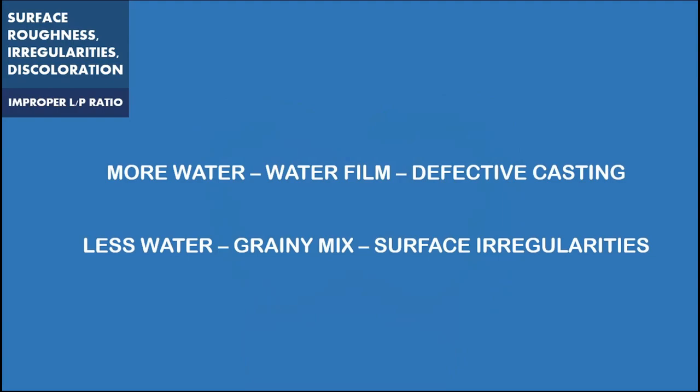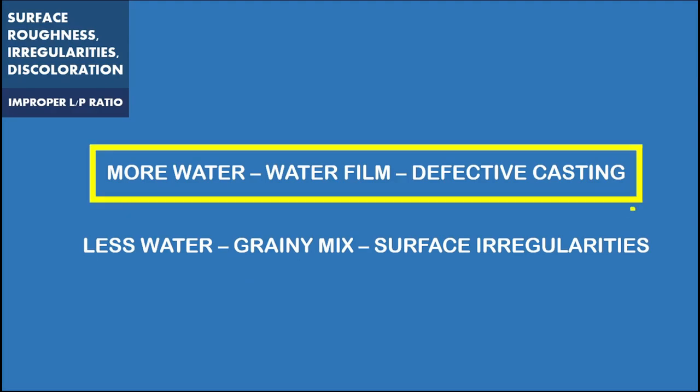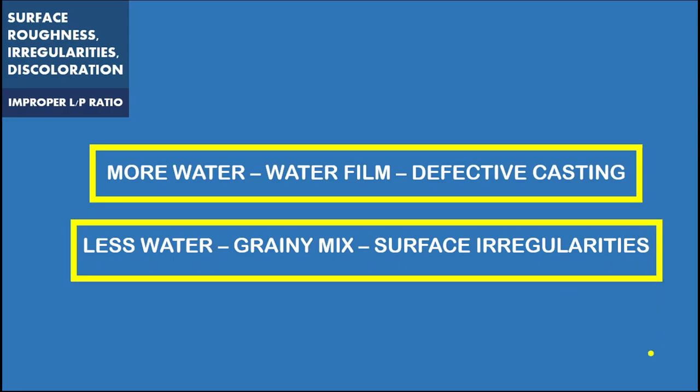Too high liquid to powder ratio of the investment may also produce these surface irregularities. The improper powder-liquid ratio of the investment can lead to surface irregularities. The amount of water and investment should be measured accurately. The higher the liquid to powder ratio, the rougher the casting will be. However, if too little water is used, the investment may be very thick so that it cannot be properly applied to the pattern leading to surface irregularities.